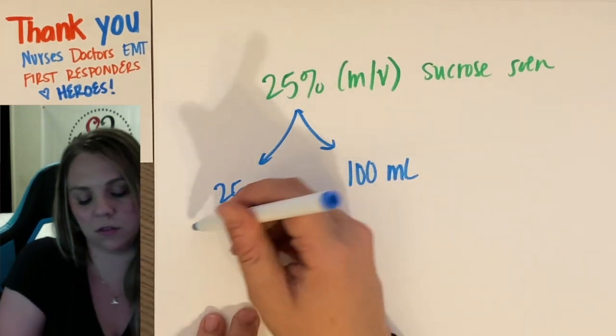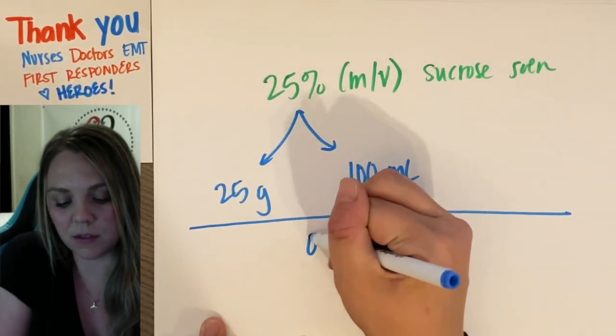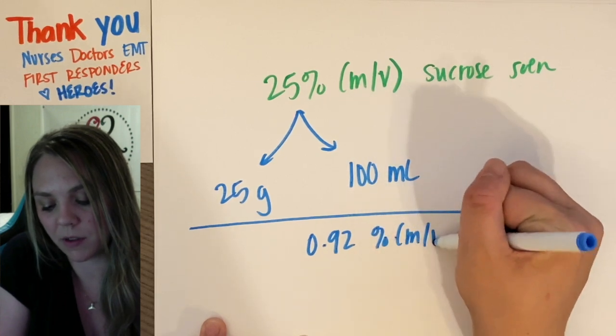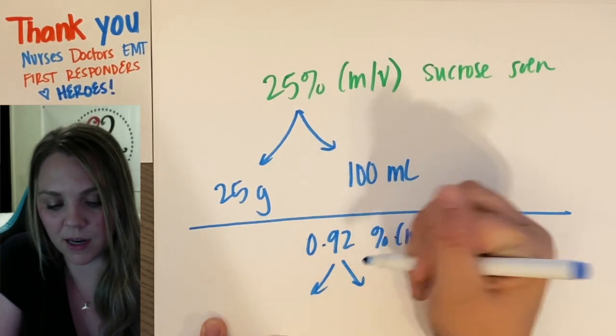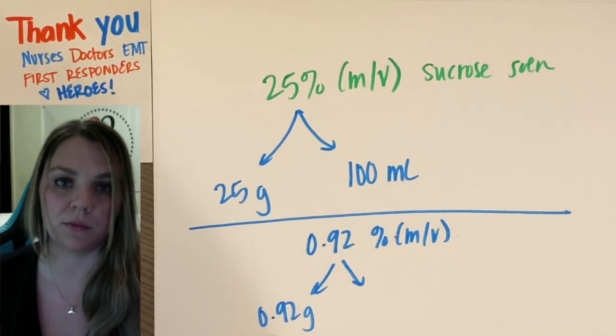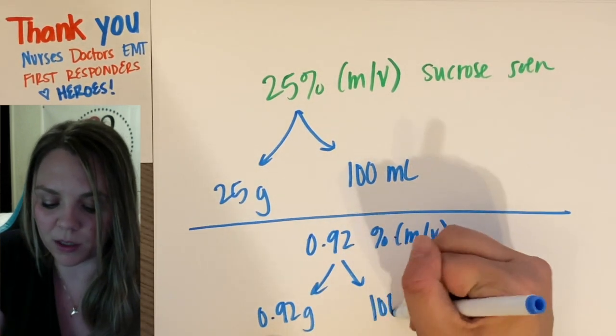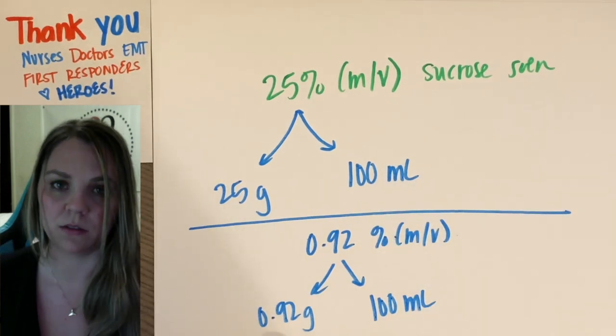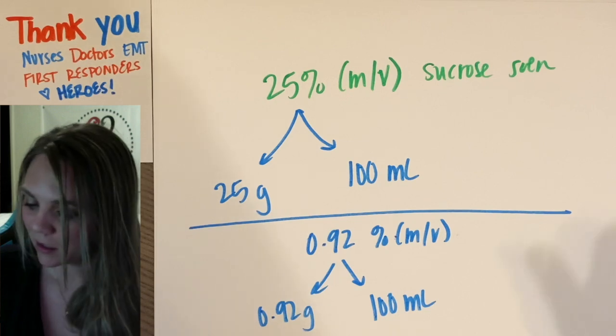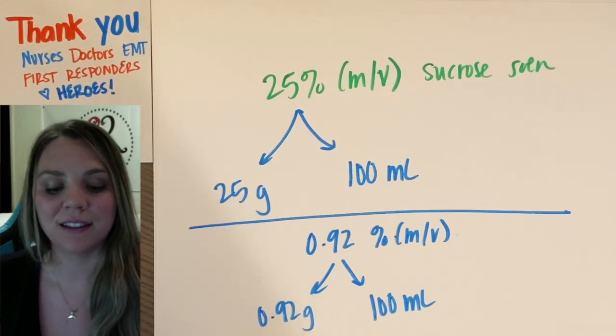If I had something like this, 0.92, if I had a solution that was 0.92% mass by volume, so that means that I have 0.92 grams of my solute for every 100 milliliters of solution. Hopefully that makes sense. All right, good luck.